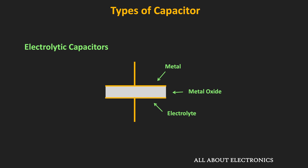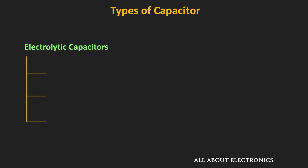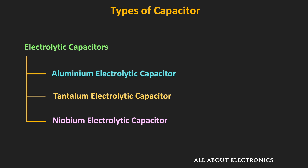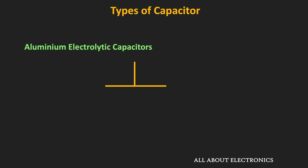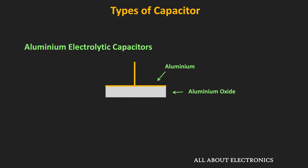Depending on the type of material used for the electrode, there are three types of electrolytic capacitors: aluminum, tantalum, and niobium. In aluminum capacitors, the anode or positive terminal is made up of aluminum, the aluminum oxide acts as a dielectric, and the electrolyte acts as the cathode. Since the oxide layer is very thin, it is possible to achieve very high capacitance in aluminum capacitors.